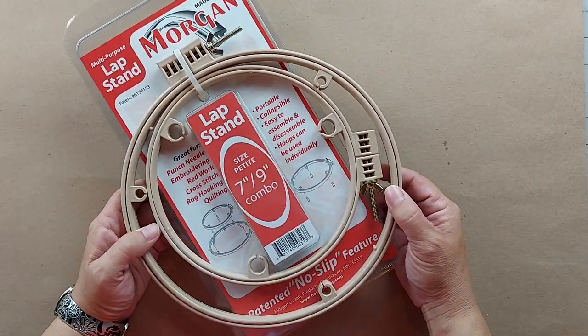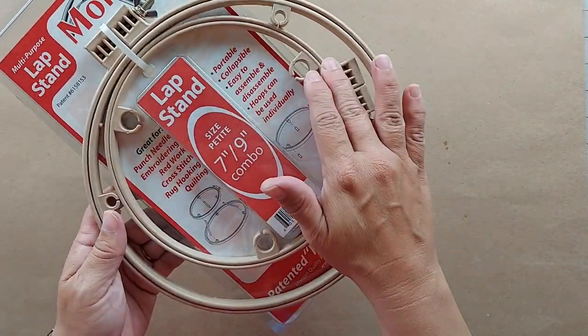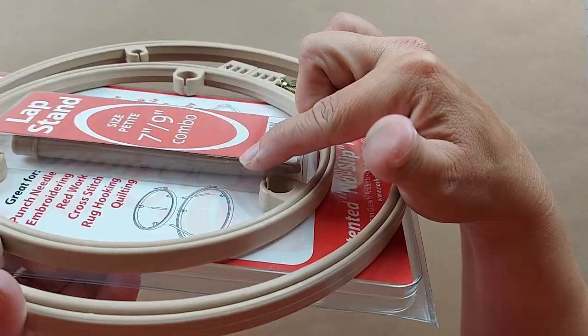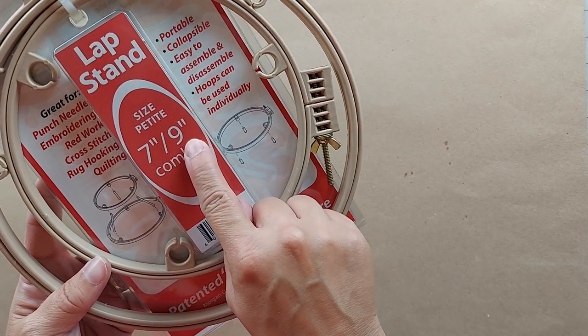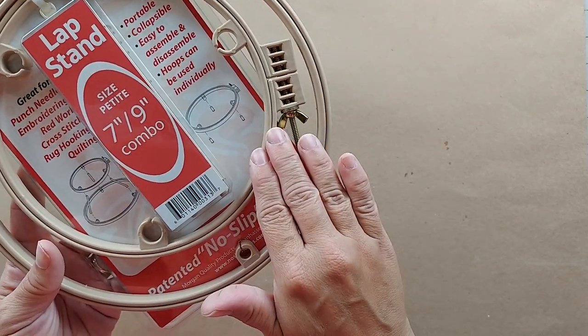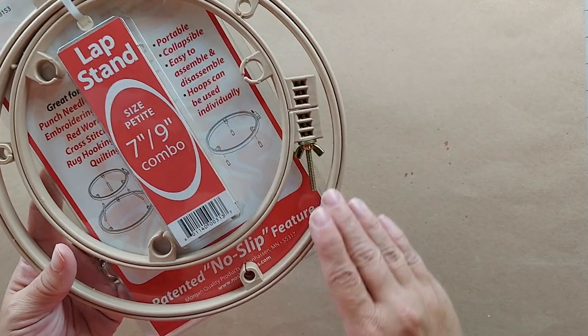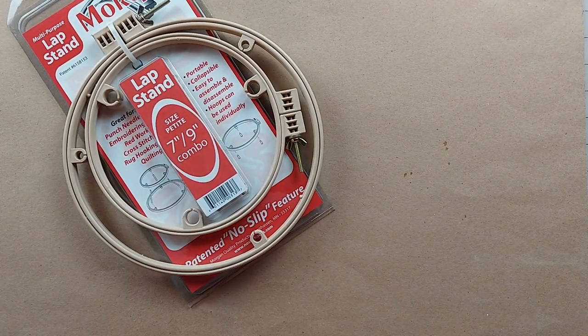When you purchase a Morgan lap stand it will come to you in a package like this. It's got the two hoops here and then it's got the pillars here, and it comes in different sizes. This is a seven inch nine inch, and that means that this littler hoop is seven inches in diameter and this big hoop is nine inch in diameter, and the pillars space the hoops four inches apart.